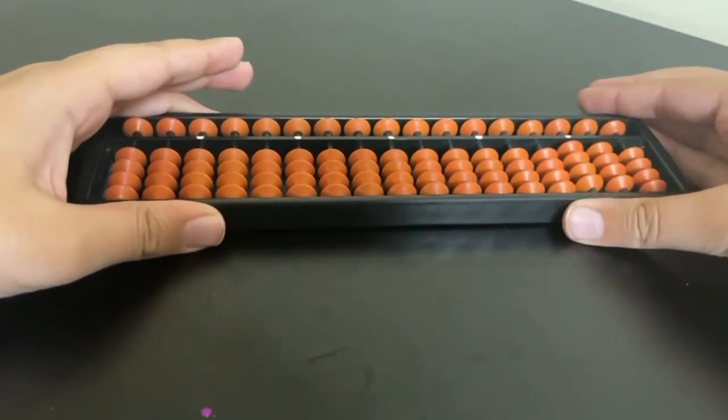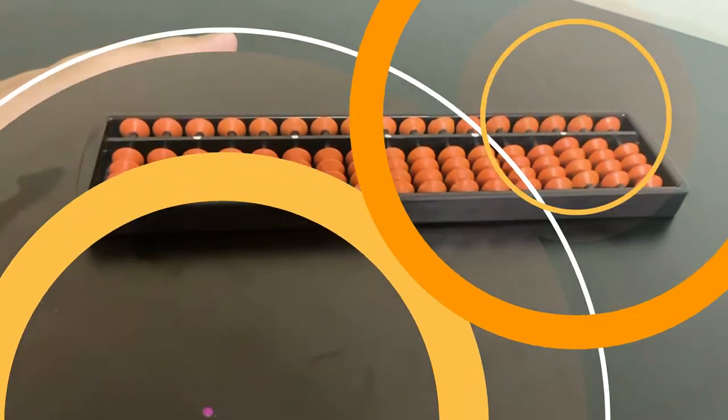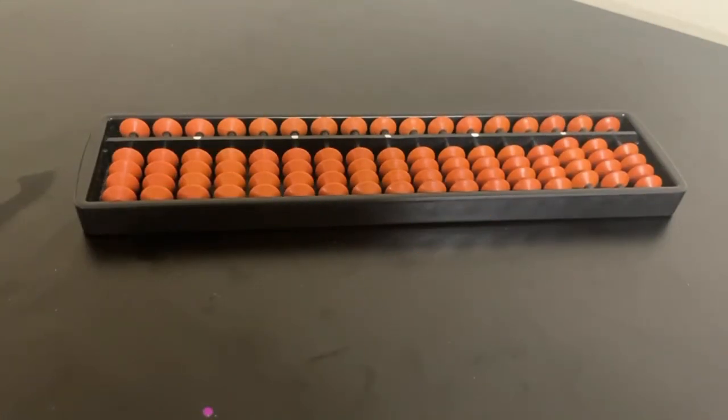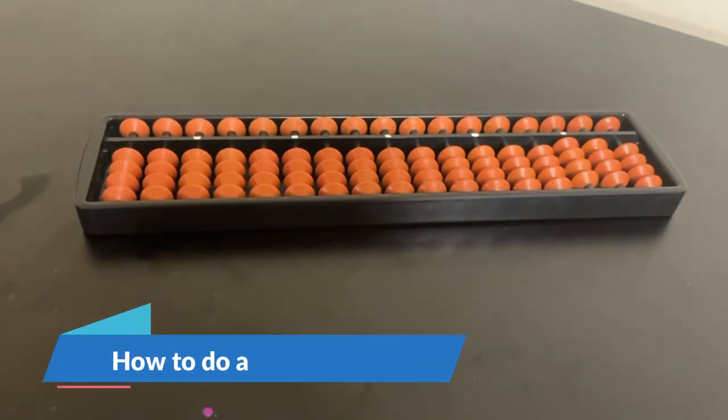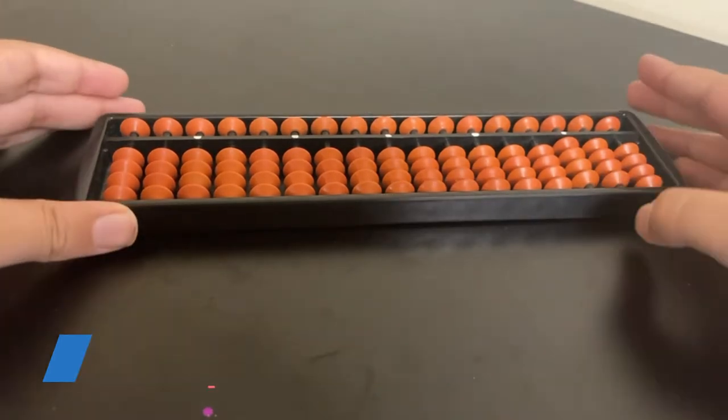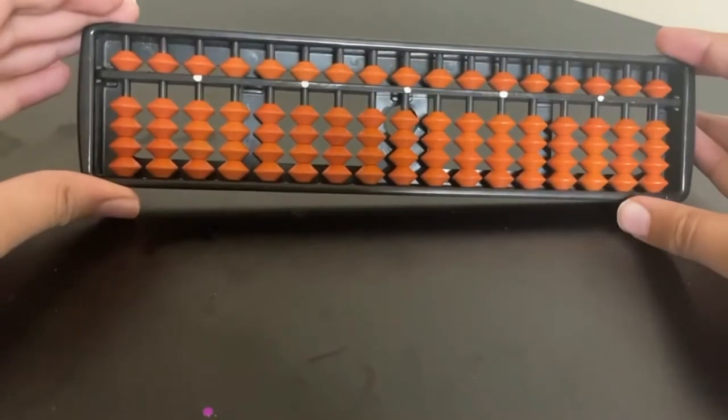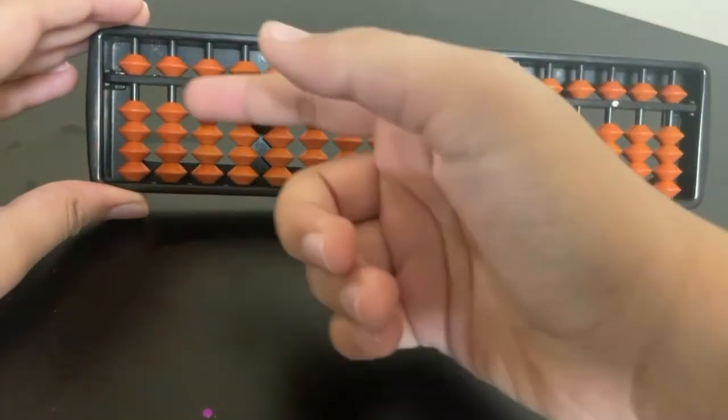The second step you need to learn for beginners is how to do a short clear. Now what is a short clear? For example, if your abacus tilts over and this happens, all these beads fall down. How do you bring them back up?